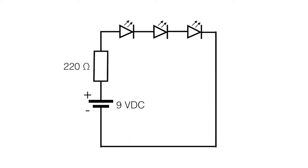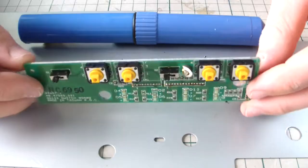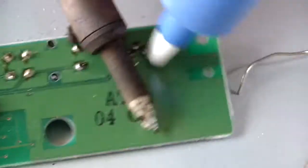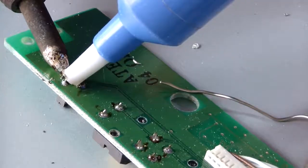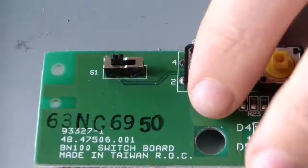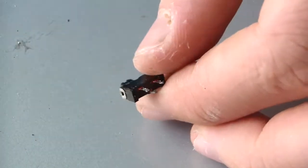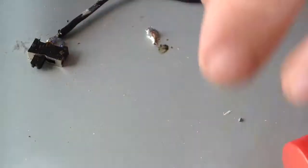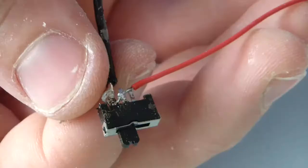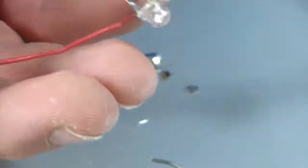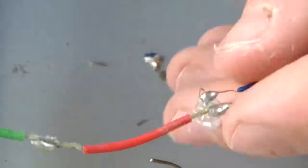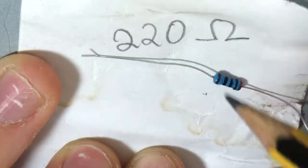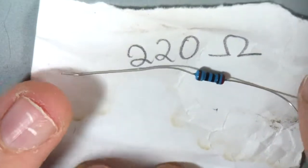Here is the schematic. I have scavenged the switch from an old circuit board, and I am using a 220 ohm resistor.